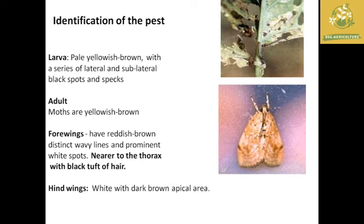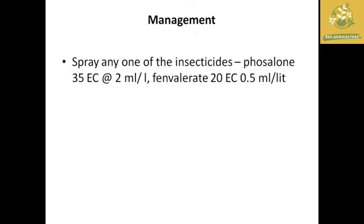The larva of the leaf weber is pale yellowish-brown with a series of lateral and sublateral black spots and specks. The adult is a yellowish-brown moth with a black tuft of hair near the thorax on the forewings and white hindwings with a dark brown apical area. Effective management includes spraying endosulfan 35 EC at 2 ml per liter or fenvalerate 20 EC at 0.5 ml per liter.